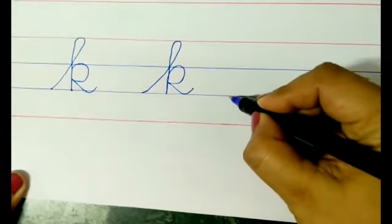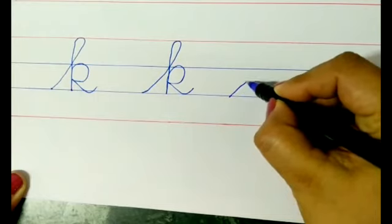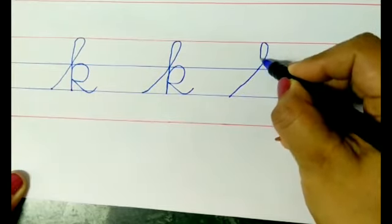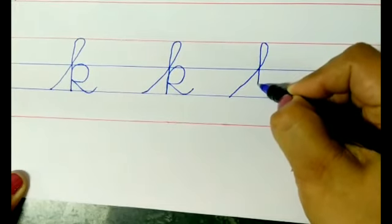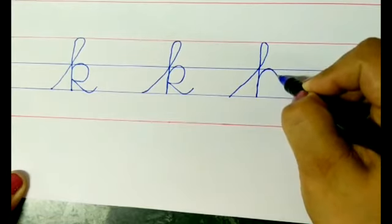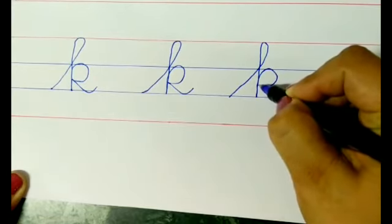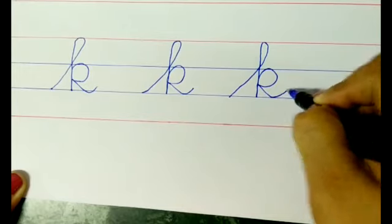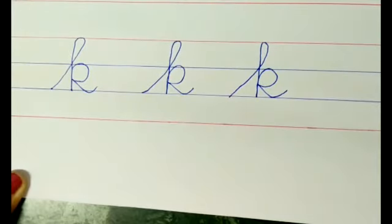Once again. Go slanting, make a loop. Come down straight. Climb back up. Over and around, and kick, and slide away to make a tail. That is how we write cursive small K.